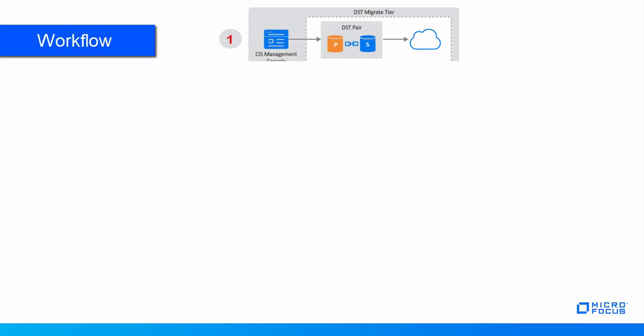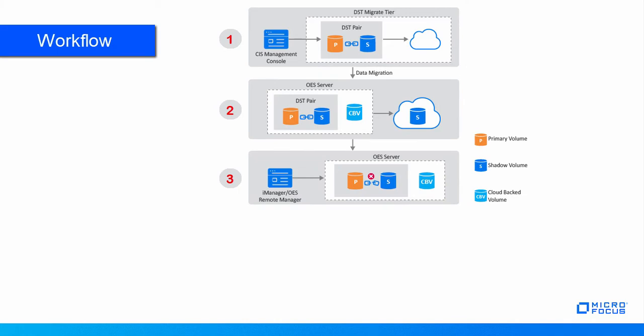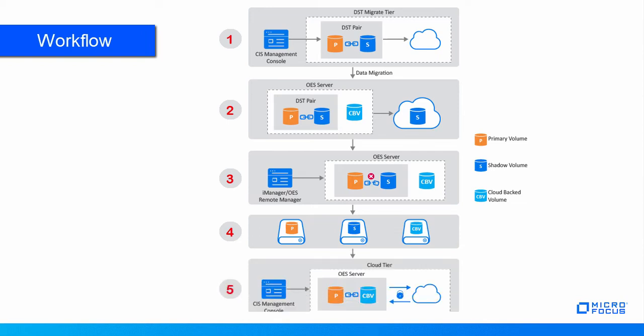So, what does this video cover? The DST Migration procedure includes five steps. First, we need to associate the DST Volume to CIS-TO. Second, migrate DST Shadow Volume data to cloud storage. Third, remove the DST pair. Fourth, ensure that the DST primary, secondary, and cloud-backed volumes are mounted. And finally, switch the DST Migrate tier to Normal Cloud tier. You need to perform these steps sequentially as shown.